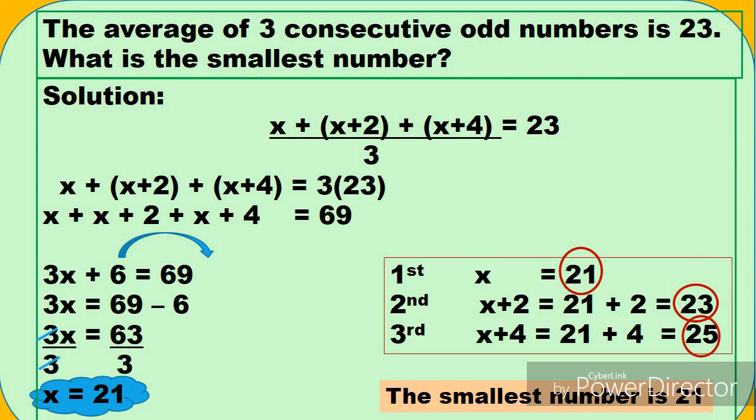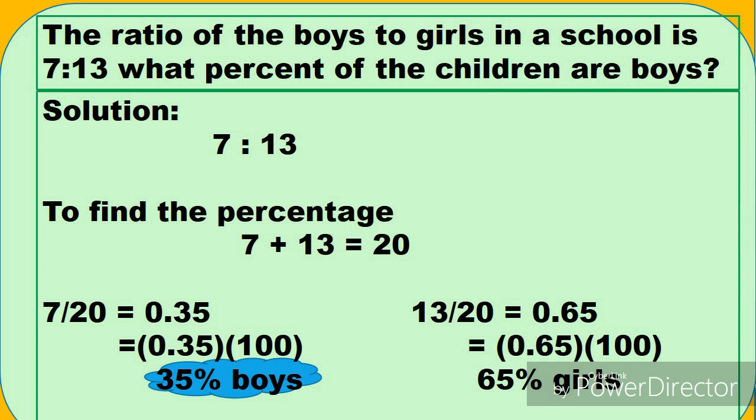So kung yung unang number is X, therefore we have 21. Kung yung pangalawang number ay X plus 2, so 21 plus 2 equals 23. Kung yung pangatlong number ay X plus 4, substitute natin at uli yung 21. 21 plus 4 equals 25.